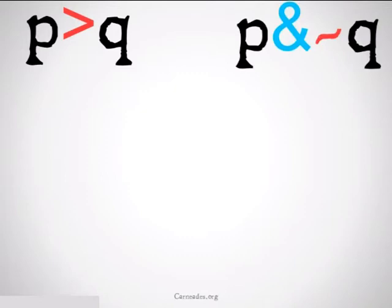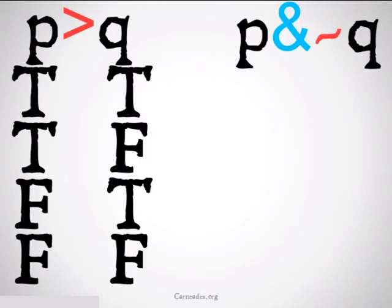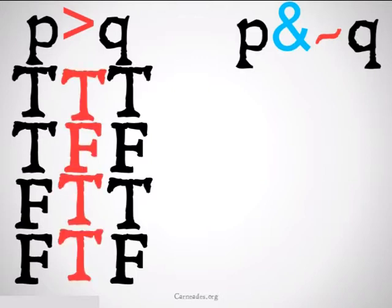Let's say I want to compare the two propositions P implies Q and P and not Q. For the first proposition, I would fill in my truth table as normal, and then fill in my truth table under the implication sign, remembering the only time implication is false is when the antecedent, the first, is true, and the second, the consequent, is false.